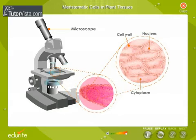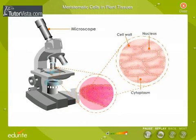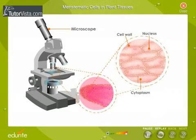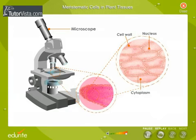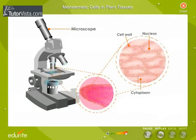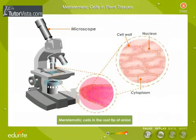Locate the thin-walled cells full of cytoplasm a little above the actual tip of the root. Note the large nucleus. These thin-walled cells in plant tissues are meristematic cells.